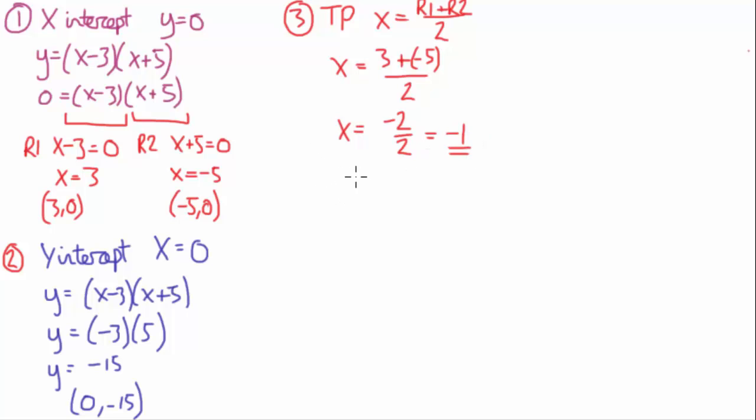Now to find the y-coordinate, what we need to then do is, remember we've got this, we always go back to the initial equation. And then we substitute x for minus 1, or minus 1 for x. So y equals minus 1, minus 3, minus 1 plus 5.